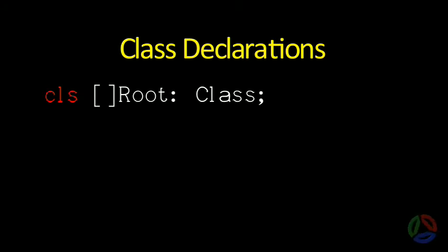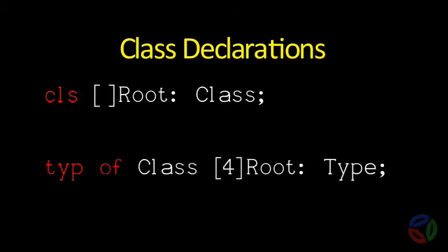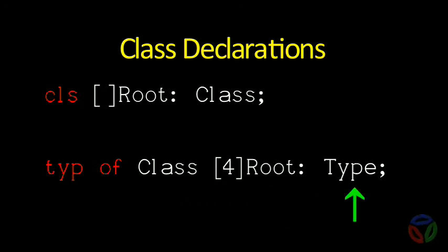In type class declarations, array dimension counts can remain undefined by using empty square brackets where the expression defining the dimension count is missing. This is done when the type class applies to all types that differ by dimension count. Here we say dimension count and avoid use of the word size because in Phi, size means the number of bits or bytes that make up a data structure. Then to define a specific type on that class, just prefix this declaration with type of, replace the keyword CLS with the name of the class, fill in the array count, and replace the class name with the specific type name.